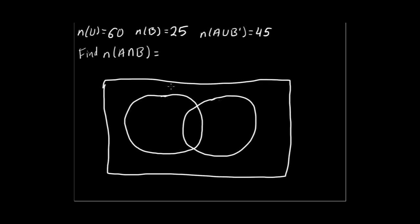We need to find the intersection of A and B, which you should already know is this area right here, the overlapping of the two sets.